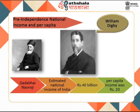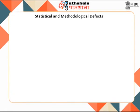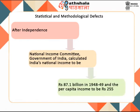Dadabhai Naoroji's estimates covering 1850 to 1900 also revealed that India was anything but prosperous under British rule. Statistical and methodological defects notwithstanding, these estimates remain a milestone in the economic history of India. After independence, the National Income Committee, Government of India, calculated India's national income to be Rs. 87.1 billion in 1948 to 1949 and the per capita income to be Rs. 255, providing some idea of the situation at the start of India's post-independence economic development.